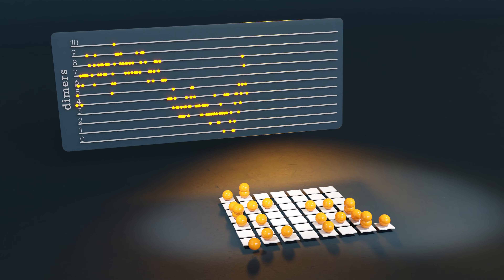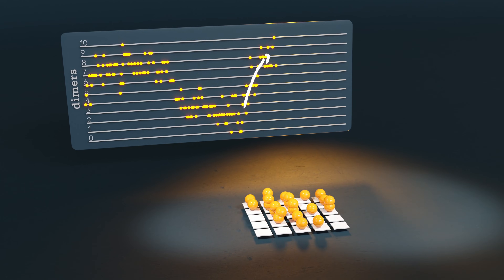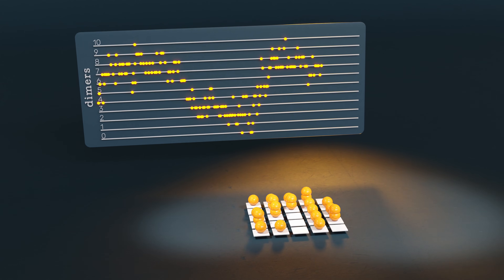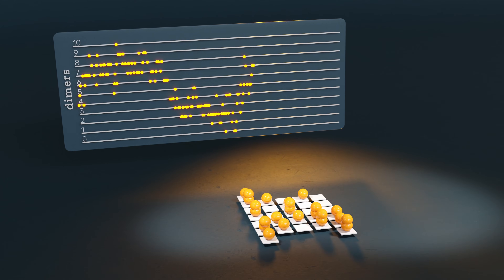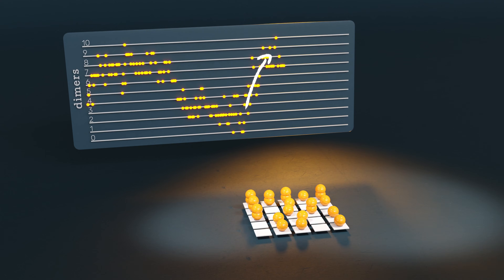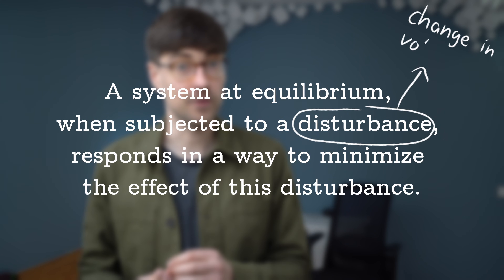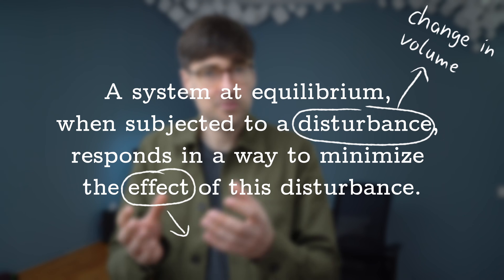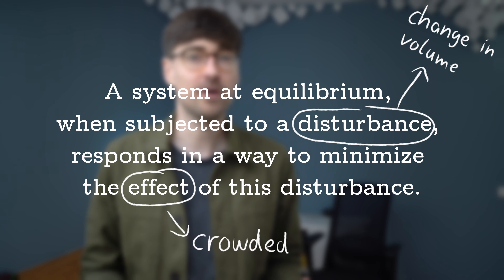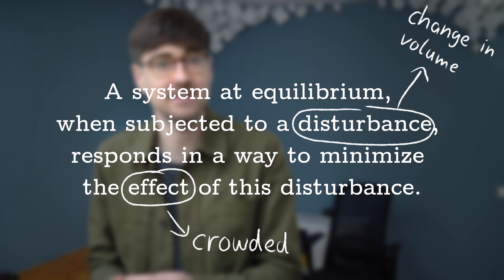We already saw that a decrease in volume increases the number of dimers, and that's easy to understand. For a dimer to form, the reaction partners have to meet in the first place, and that becomes more and more likely the less space is available. The splitting of a dimer, on the other hand, doesn't really depend on the accessible space. The disturbance in this case is the change in volume, and the effect is that it gets pretty crowded. And indeed, the equilibrium responds as if it tried to minimize this effect.